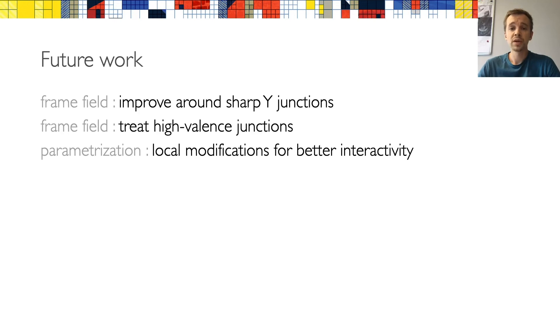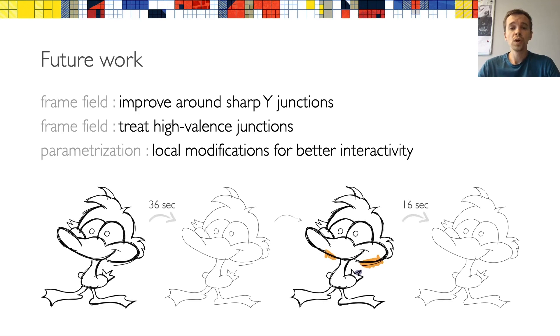We focused more on the parameterization and less on the frame field. In future, we would like to improve the behavior of the field around sharp and high valence junctions. We also plan to investigate how the parameterization could be reused and modified locally in order to improve an interactive workflow. For example, let's say that we run our entire method on this cartoon duck and it takes around 36 seconds. Then, if we modify the mask, right now we need to recompute the entire parameterization, which takes around 16 seconds, but it's likely that it would be sufficient to just recompute it in the areas affected by the mask. And this would, of course, significantly decrease the update time.